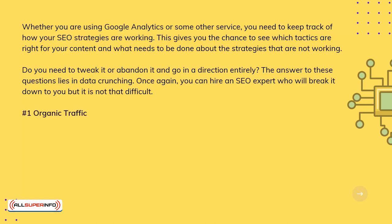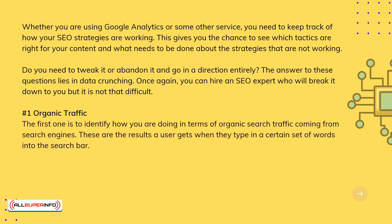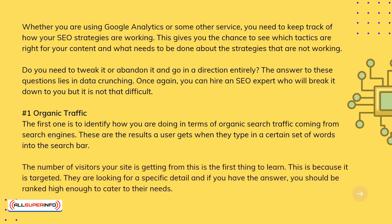1. Organic Traffic. The first metric is to identify how you are doing in terms of organic search traffic coming in from search engines. These are the results a user gets when they type in a certain set of words into the search bar. The number of visitors your site is getting from this is the first thing to learn, because it is targeted — they are looking for a specific detail, and if you have the answer, you should be ranked high enough to cater to their needs.